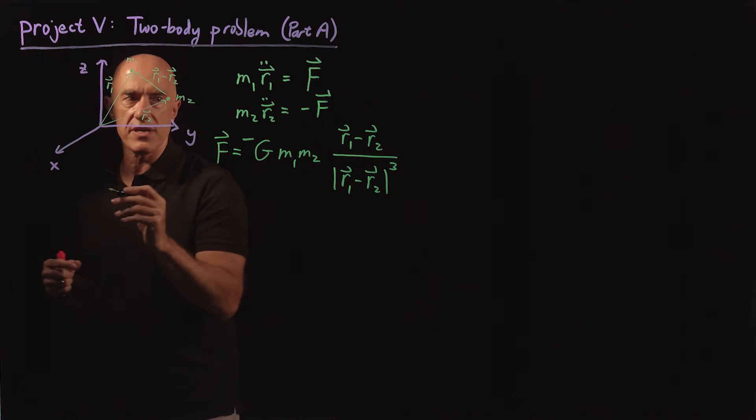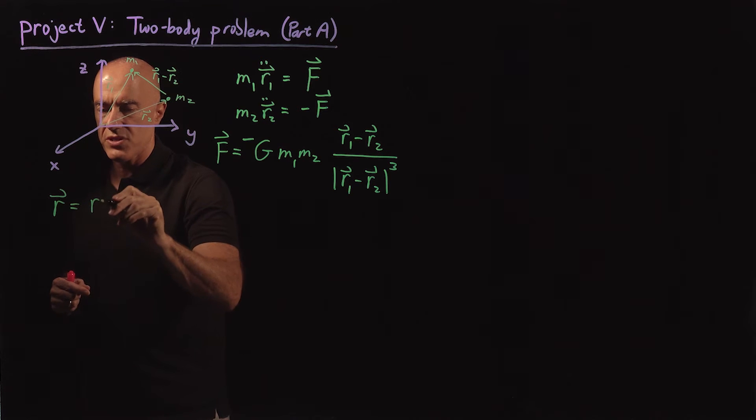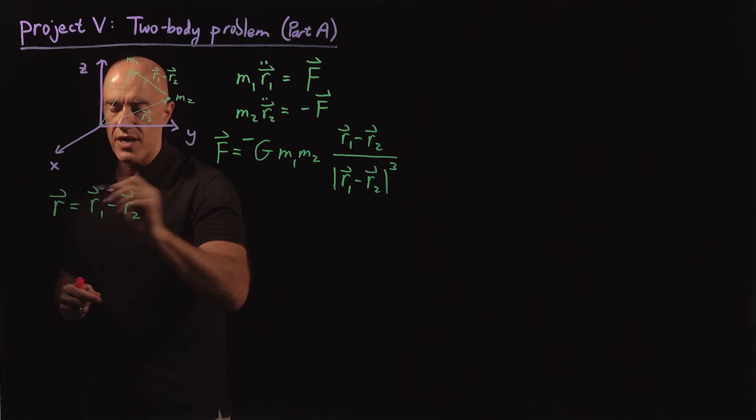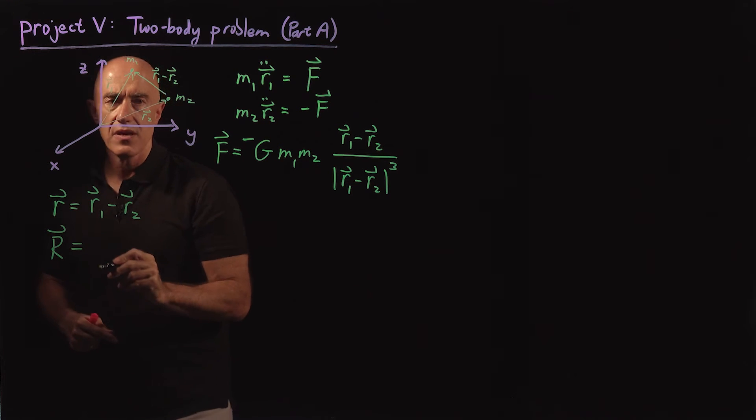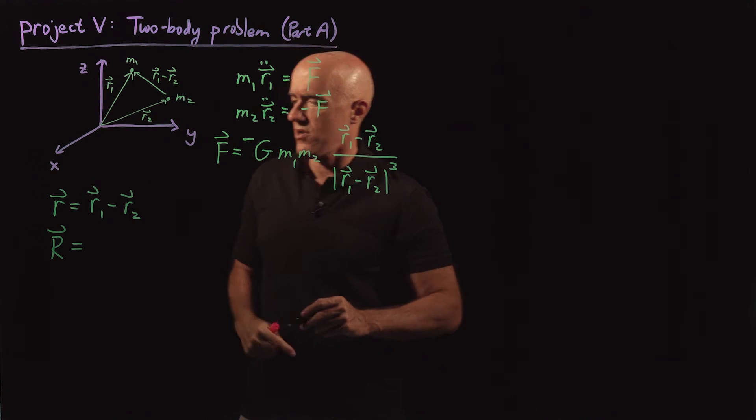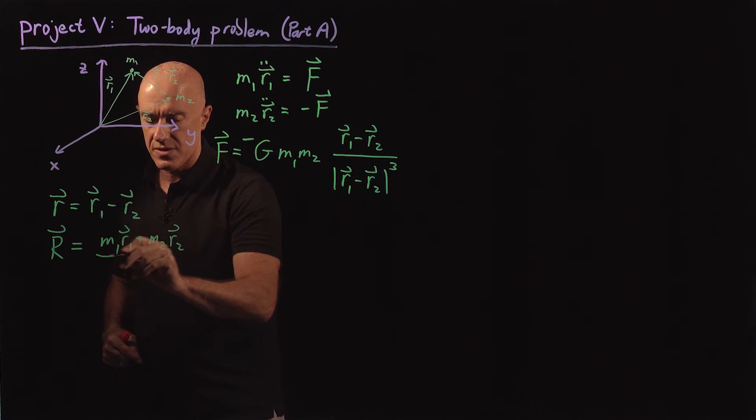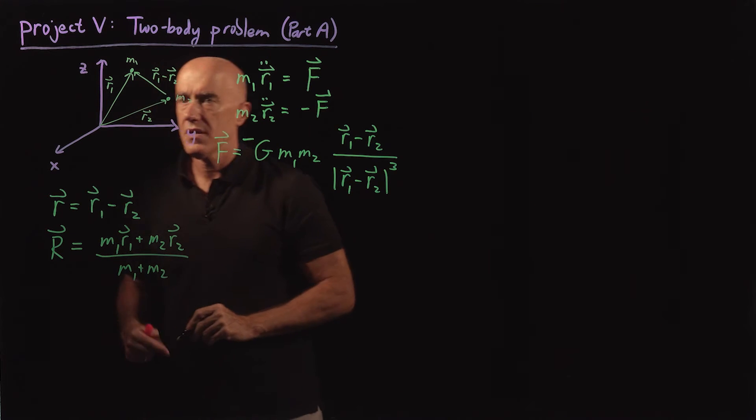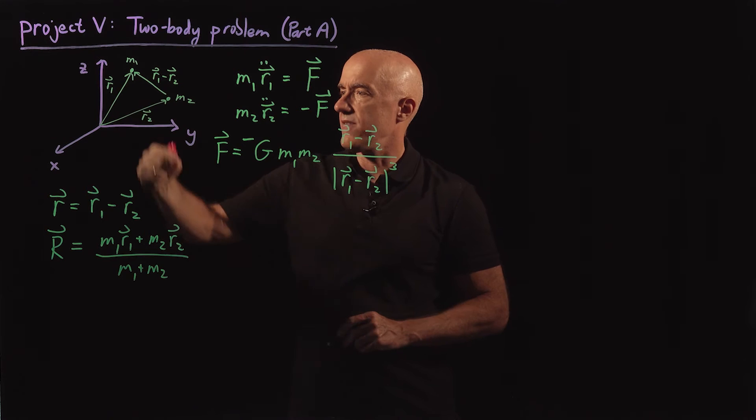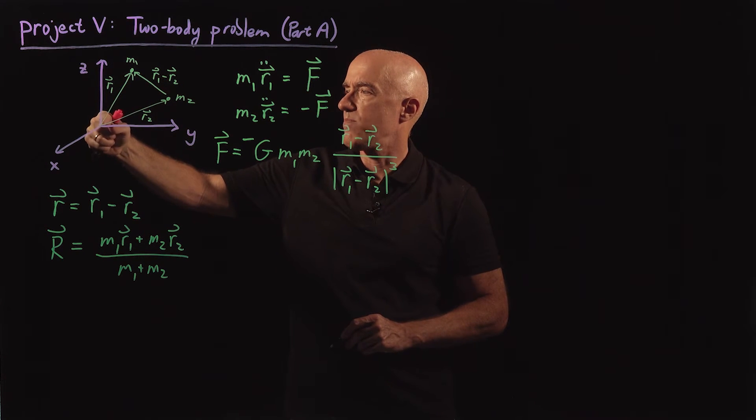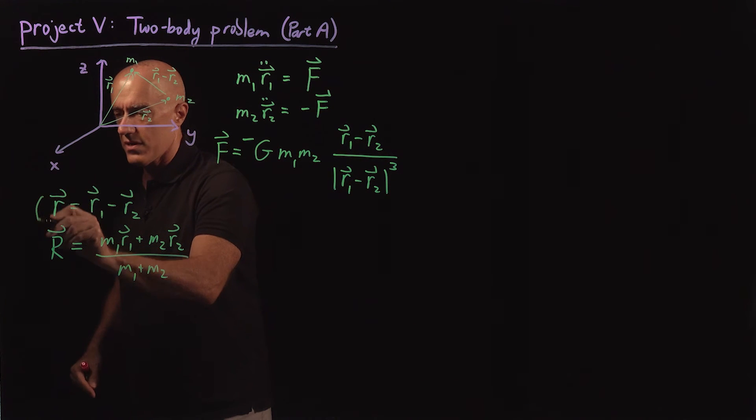So the center of mass coordinate system changes from the r1, r2 vector to the r vector, which is the relative distance vector, r1 minus r2, and the capital R vector, which is the center of mass coordinate, which is a weighted average of r1 and r2. So it's m1 times r1 plus m2 times r2 divided by m1 plus m2. So capital R is a vector which points somewhere in between m1 and m2. And if, say, m1 is heavier than m2, then it points somewhere in between that's closer to m1 than to m2. So this is our new coordinates.